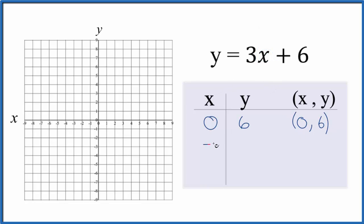If I put negative 1 in, negative 1 for x, 3 times negative 1, that's negative 3, negative 3 plus 6, that'll give me a positive 3.